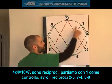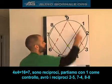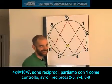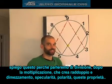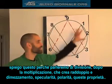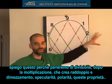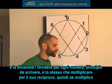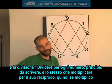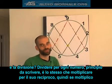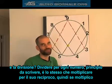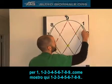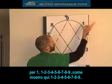We're going to start with 1 as my control. So if 1 is my control, my reciprocals are going to be 2 and 5, 7 and 4, 8 and 8. Now, the reason I explained all that: we were going to talk about division. We talked about multiplication — what does it create? It creates doubling, halving, mirror imaging, and polarity. We get all these properties from multiplication. Well, how about division? Here's a principle to write down: dividing by any number is exactly the same as multiplying by its reciprocal.